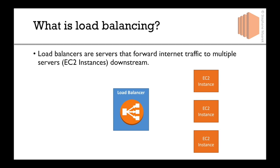Here's what it looks like. We have say three EC2 instances and they all run the same application. In the middle we'll set up a load balancer. Say there's user one and user one connects to the load balancer — it will just be a URL like any other website. The load balancer will transmit that request to an EC2 instance, for example the first one. The EC2 instance will come back with a response to the load balancer, and once the response is good, the load balancer will forward that response to user one.